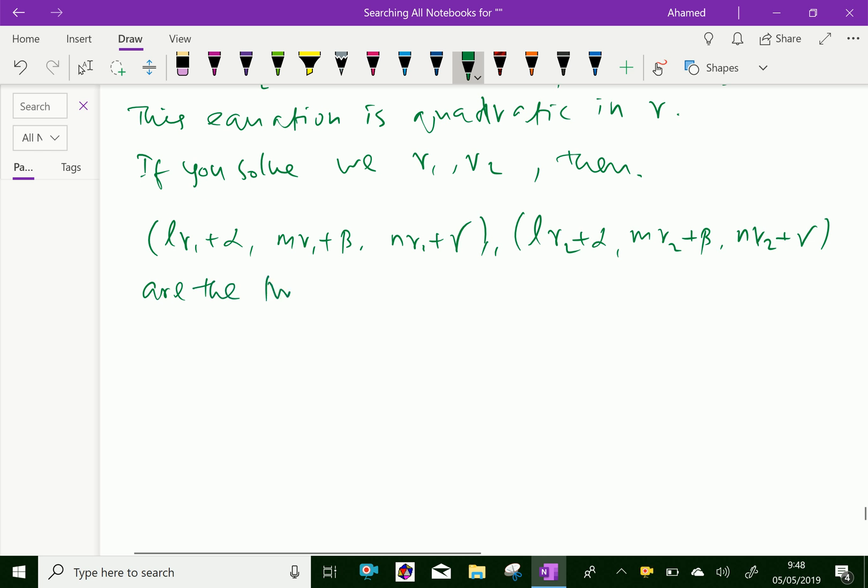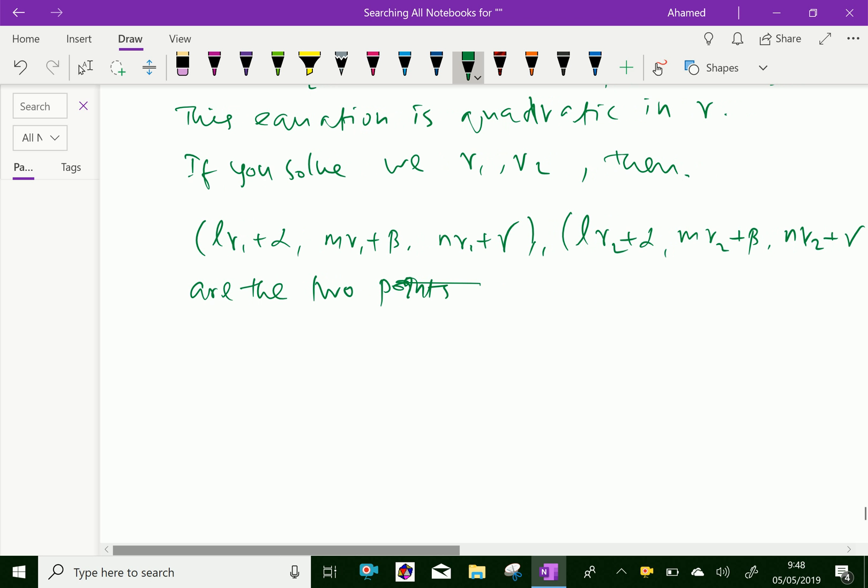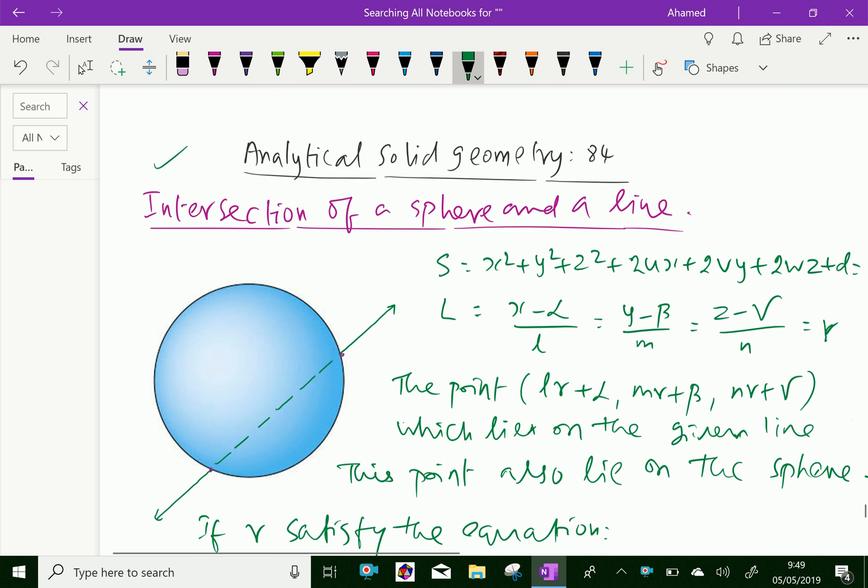These are the two points of intersection. Now, by using this method, we can find the intersection points of the line and sphere. We have done. Please subscribe to our YouTube channel.